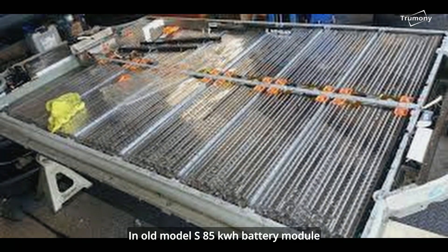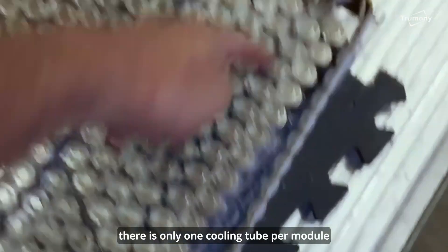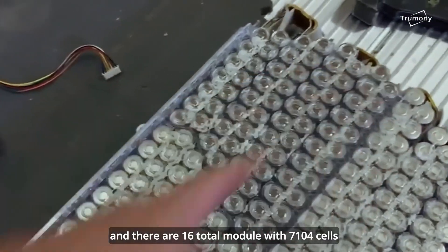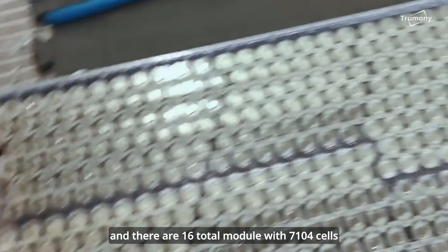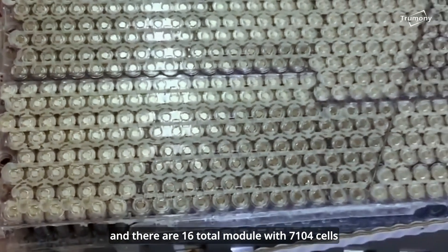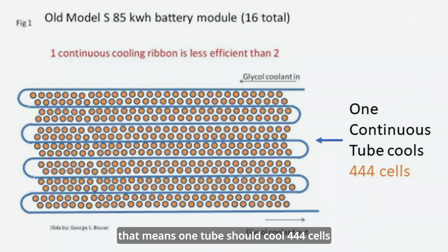In the old Model S 85kWh battery module, there is only one cooling tube per module. With 16 total modules and 7,104 cells, one tube cools 444 cells.